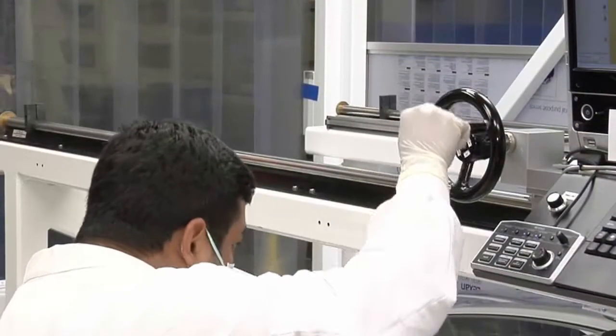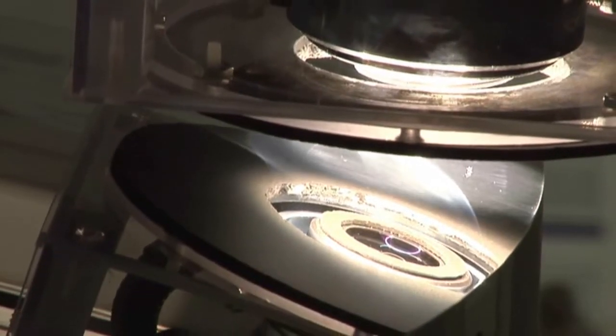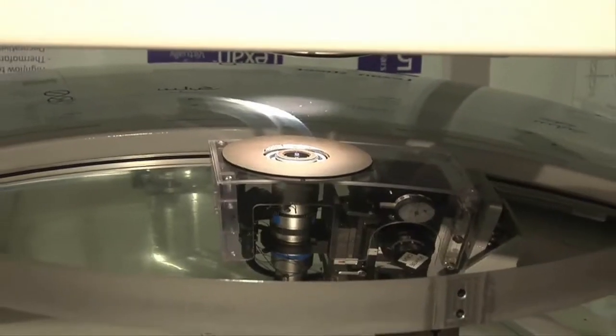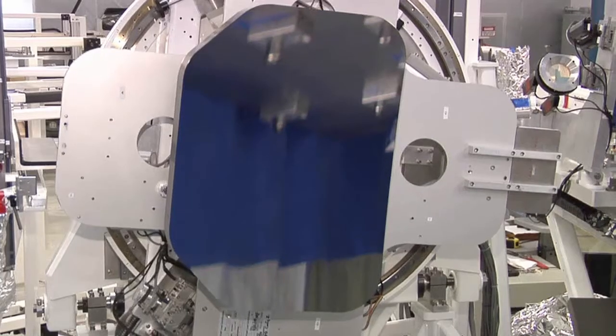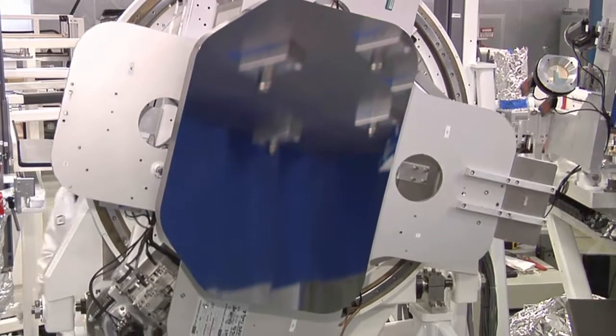All of Webb's mirror elements are being tested at Tinsley, including the secondary mirror, the only one of Webb's elements that is convex, and the tertiary mirror element, a concave ellipse.